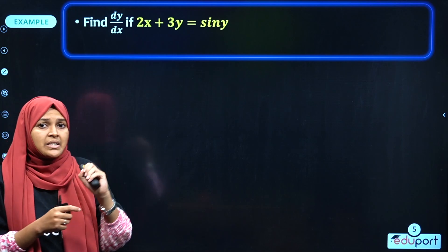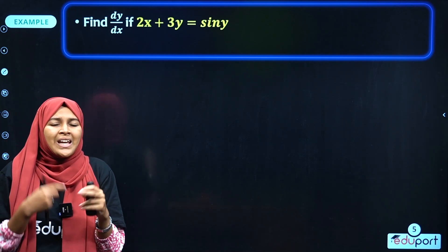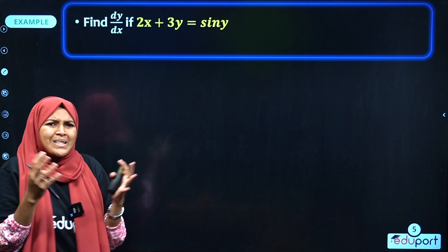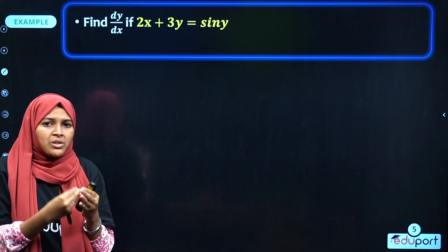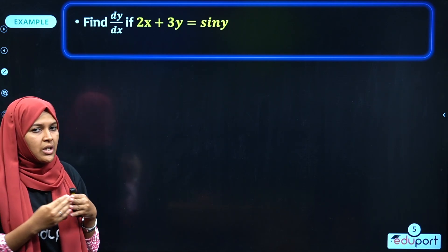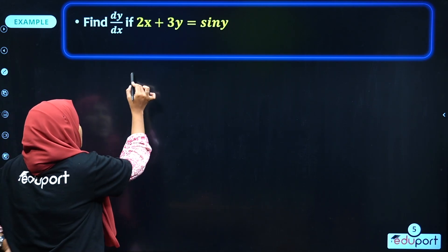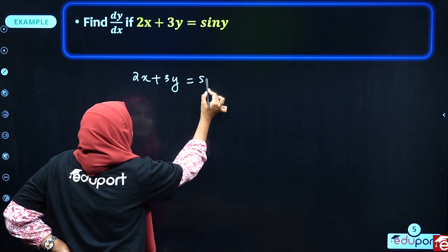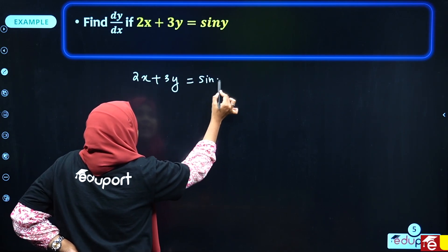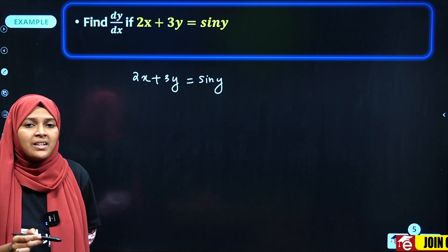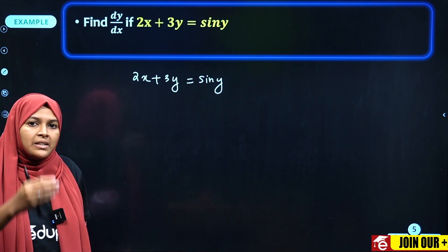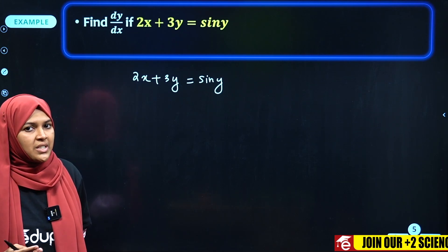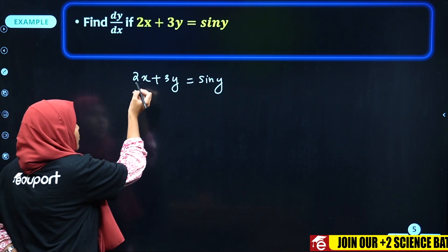This is actually implicit differentiation — that is, x and y are mixed within the equation. We need to find dy/dx. We differentiate the entire equation with respect to x.